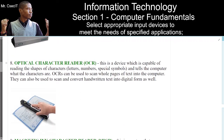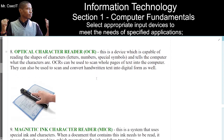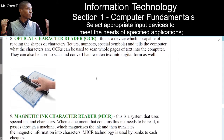Number 8. Optical Character Reader, OCR. This is a device which is capable of reading the shapes of characters, letters, numbers, and special symbols, and tells the computer what the characters are. OCRs can be used to scan whole pages of text into the computer. OCRs can also be used to scan and convert handwritten text into digital form as well.